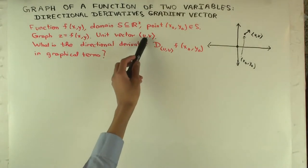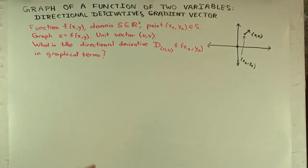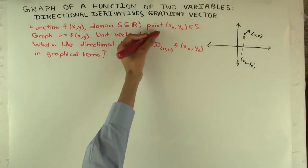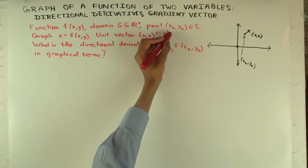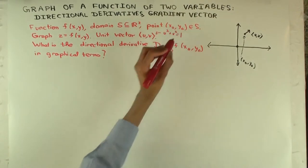And we have a unit vector (u,v), so unit vector means what? The length of the vector is 1. So u² + v² = 1² = 1.